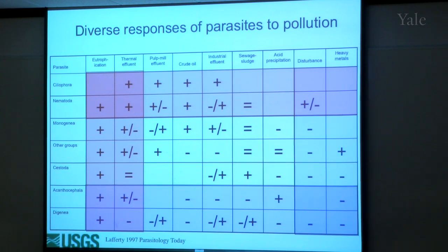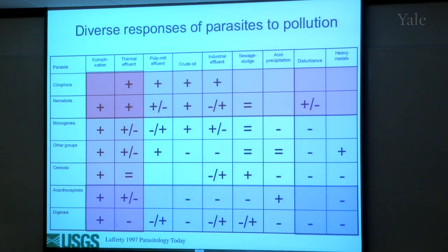This sets up the context: we can expect complex outcomes of environmental change and infectious disease. It's not simply going to be one thing or the other. Although most people might expect that stress would increase infectious disease at the host individual level, when we ask questions at the host population level, we can get different sorts of outcomes.